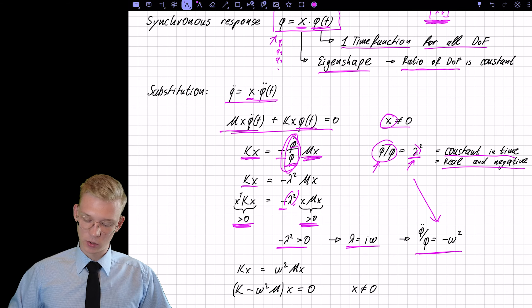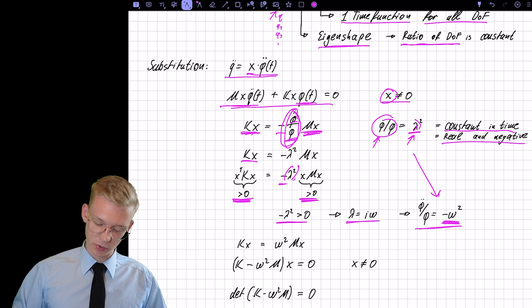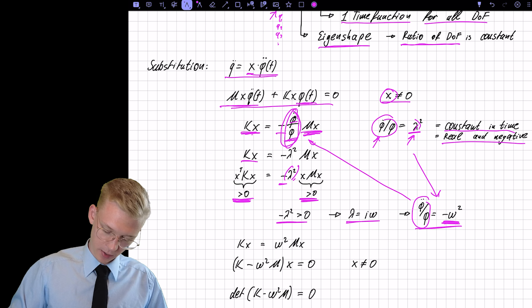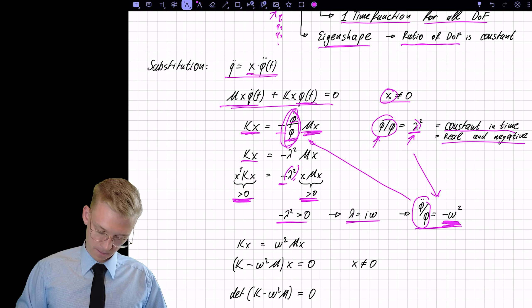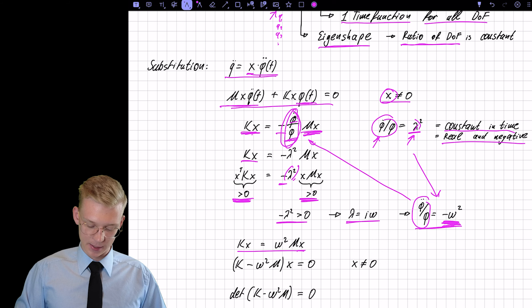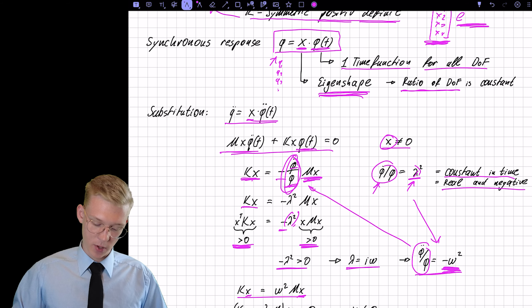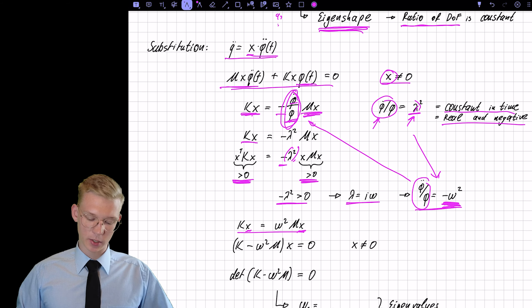So this must be true, and this can only be true if lambda is imaginary. So now we can just set our constant that we had before to phi double dot divided by phi is minus omega squared. So here we already have something that may or may not be our eigenfrequency.